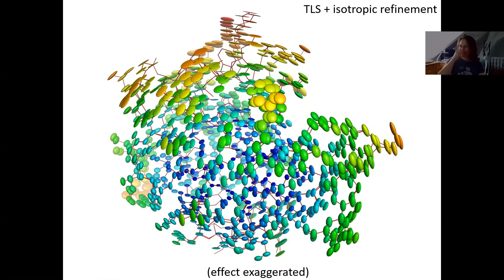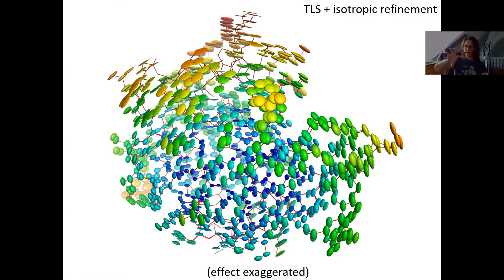A middle-ground solution is TLS plus isotropic refinement. Here you can see that the main motion — TLS moves the entire domain anisotropically as a rigid body — is doing a libration movement. You can really see some kind of wobbly motion going on, and that comes on top of an already existing individual B-factor for each atom.